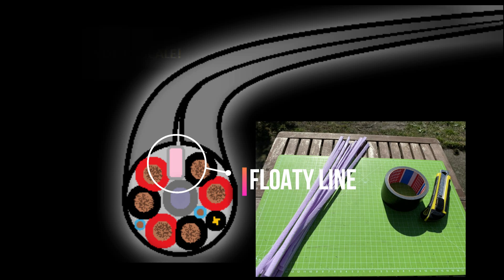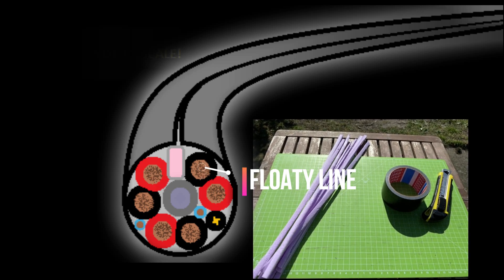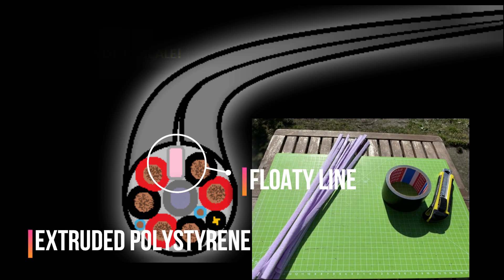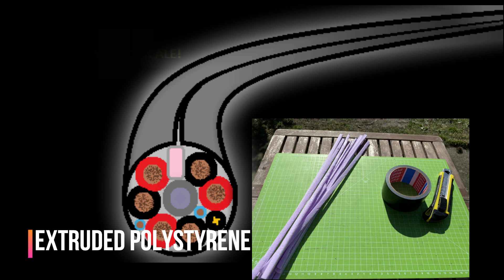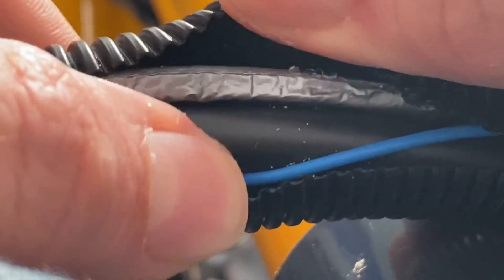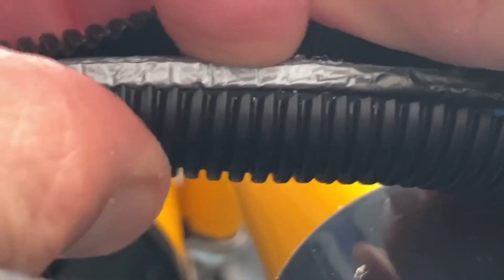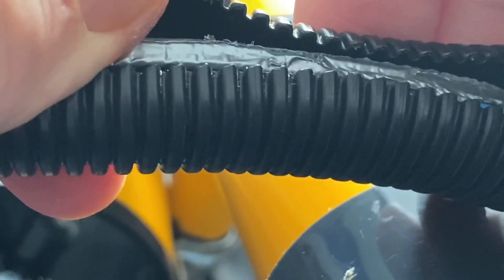The key to get this to float is a floaty line. These are long cut stripes of polystyrene surrounded by duct tape. And you just put as many into the cable sheathing as you want, or as you need, in order to keep it positively buoyant. That's all you gotta do.